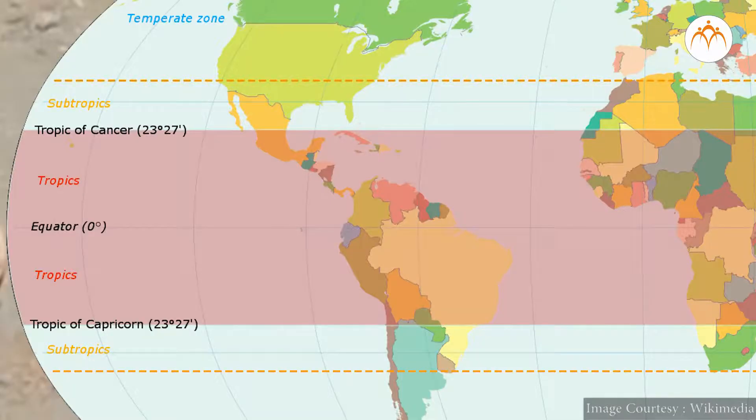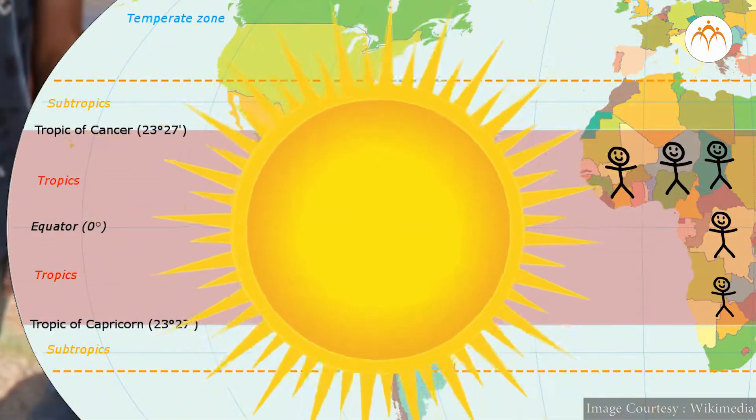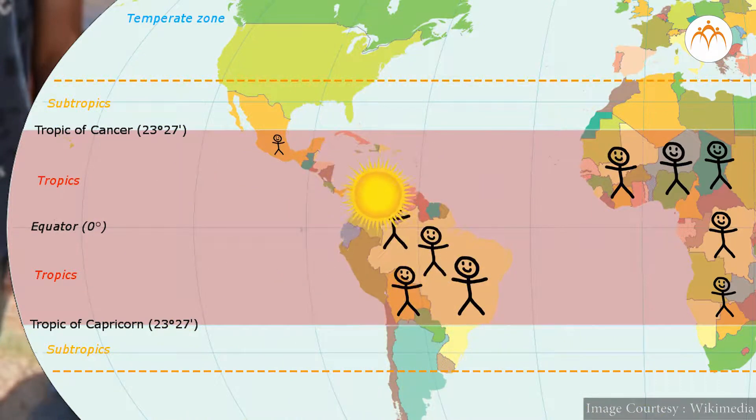For people living between positive 23.5 and negative 23.5 degrees latitude, the sun's declination will be equal to their latitude twice: once during uttarayan and once during dakshinayan. On these two days, the sun will be exactly overhead at noon.